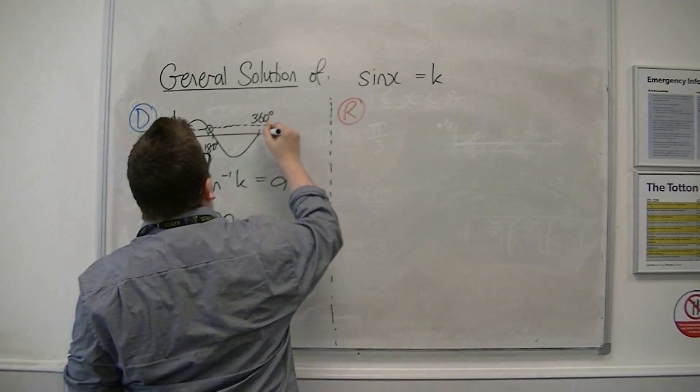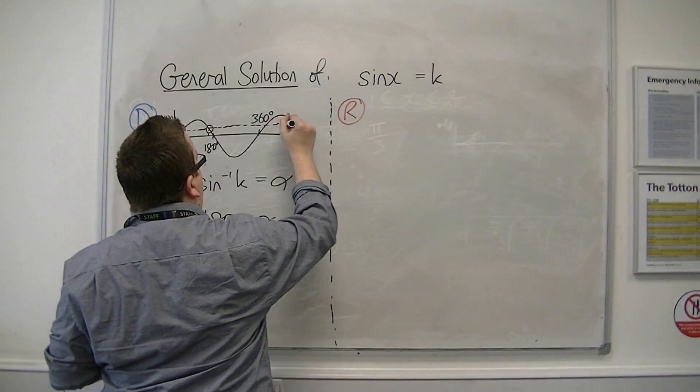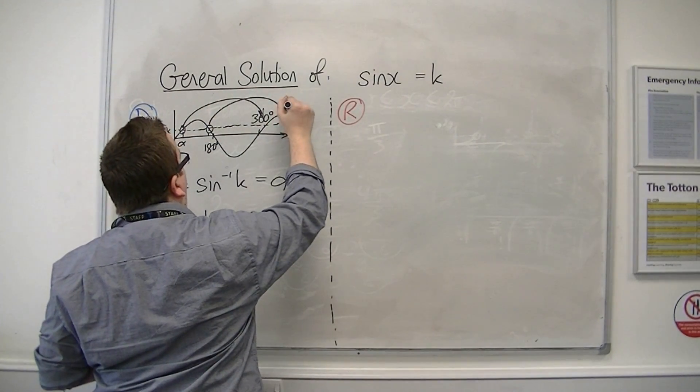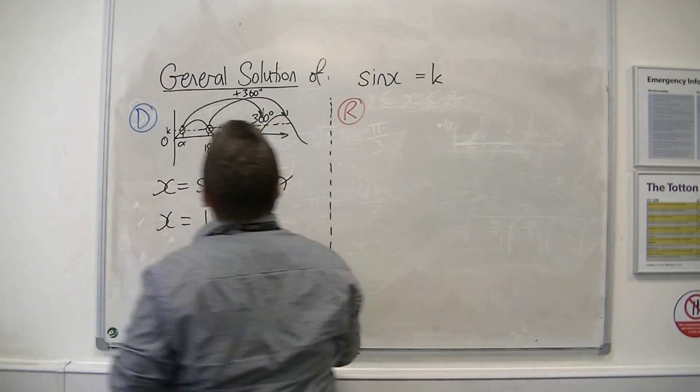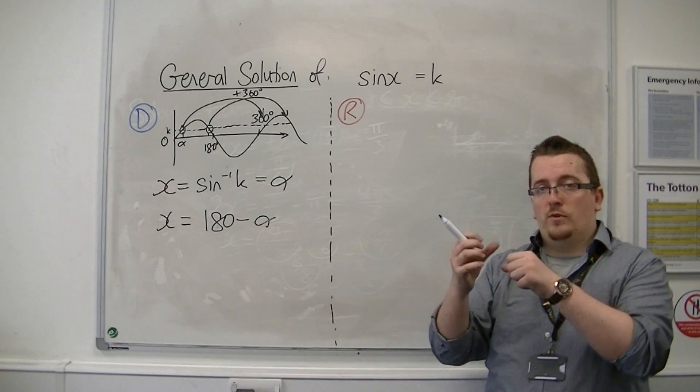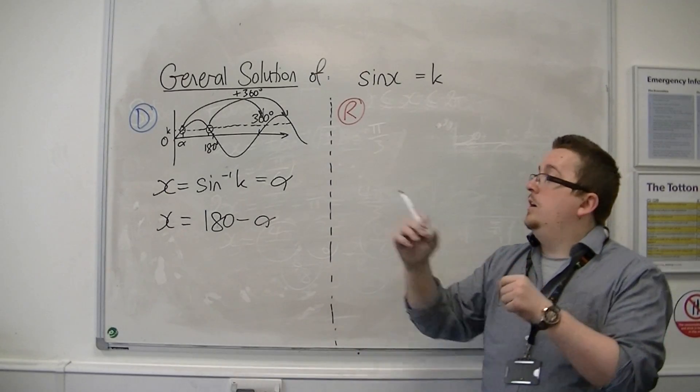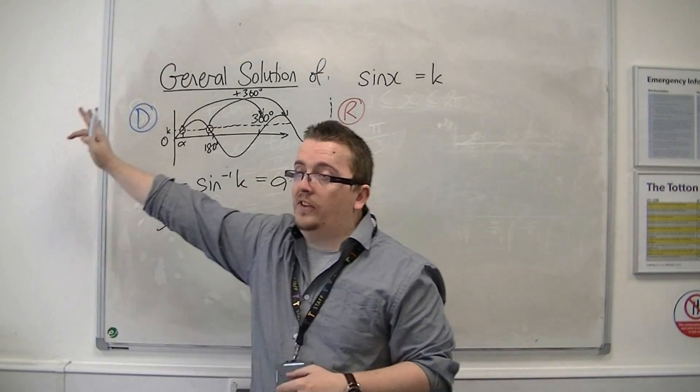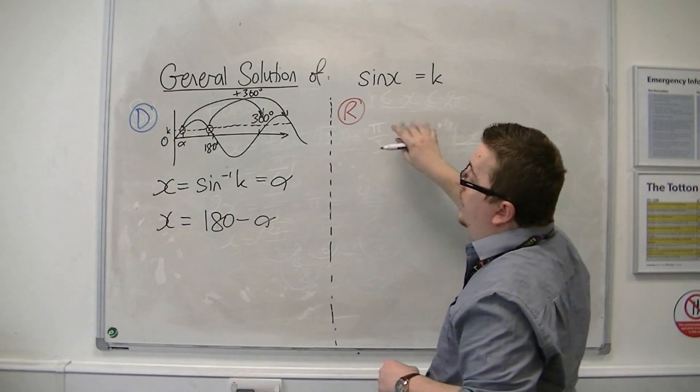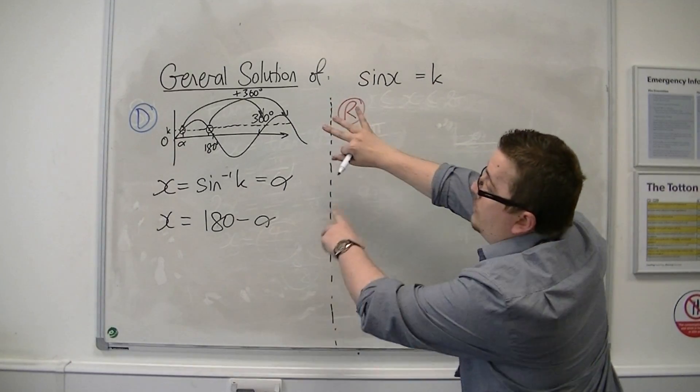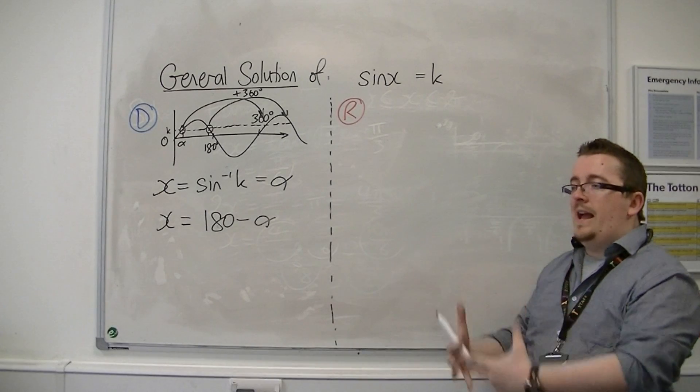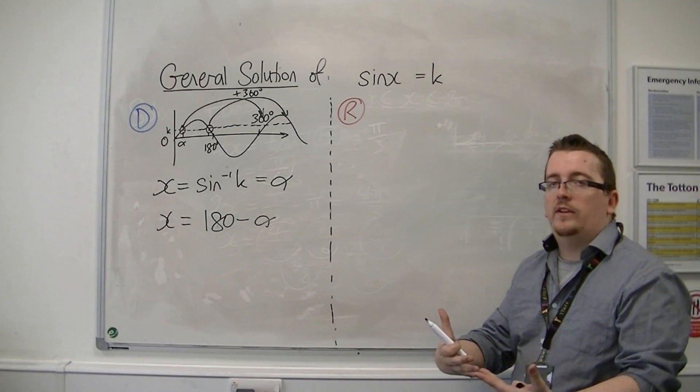If I add 360 to that, I will get the next solutions along. If I add 360 to both of them, I will get the next solutions along. If I take 360 away from both of them, I will get the solutions to the left. If I add 720, so two lots of 360, I'll get the next solutions along. Or three lots of 360, the next solutions along. So I want to be able to add multiples of 360 to it.